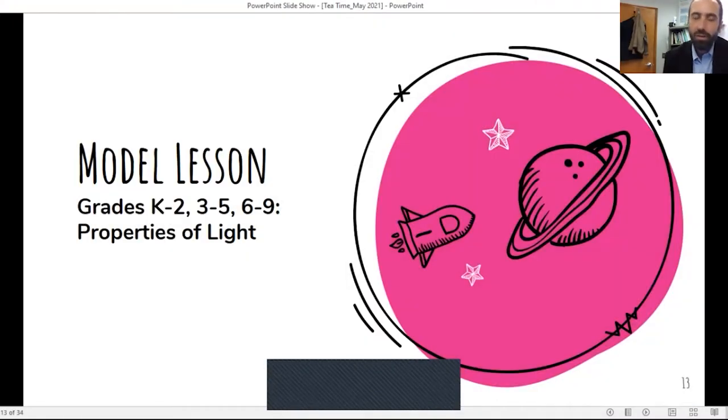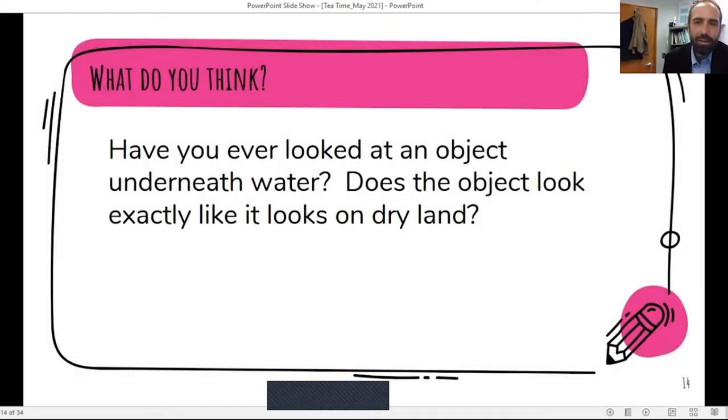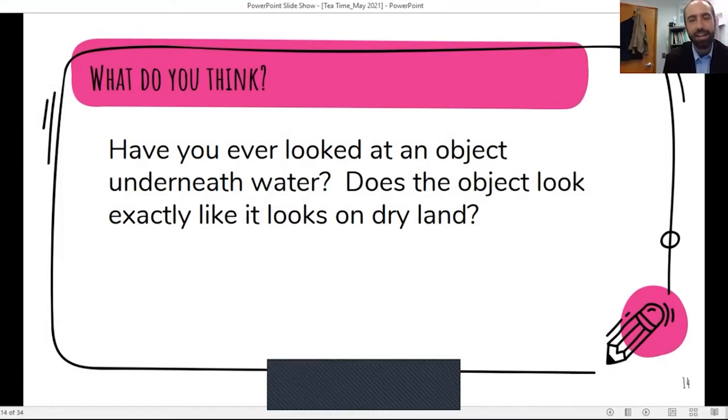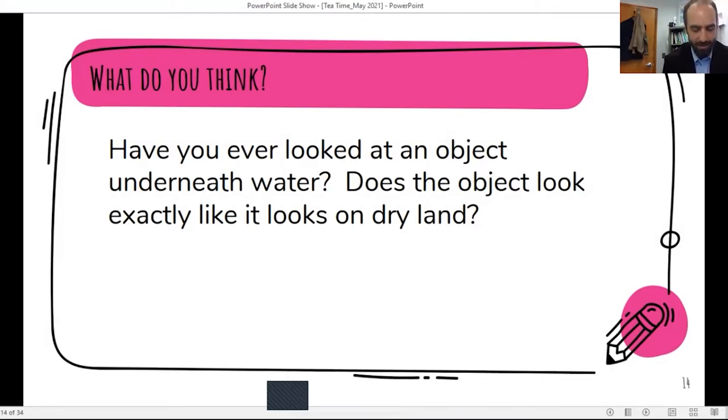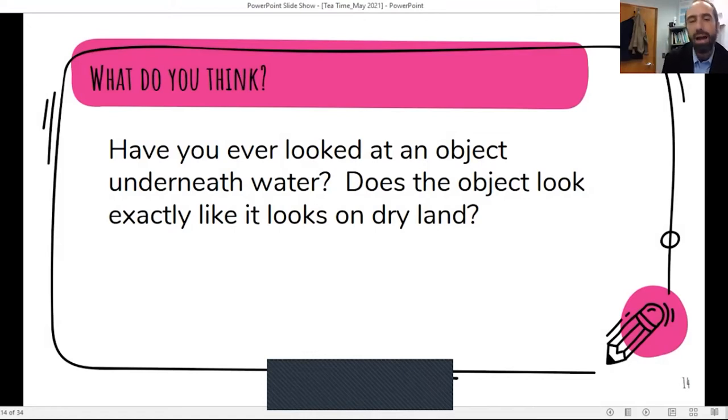I have another one that I'd like to show too, and this is a model lesson I like to do across all the grade levels as well. It deals with properties of light. So it's grounded in this idea about how do objects look in different scenarios. So have you ever looked at an object underneath water? Does the object look exactly like it does on dry land?